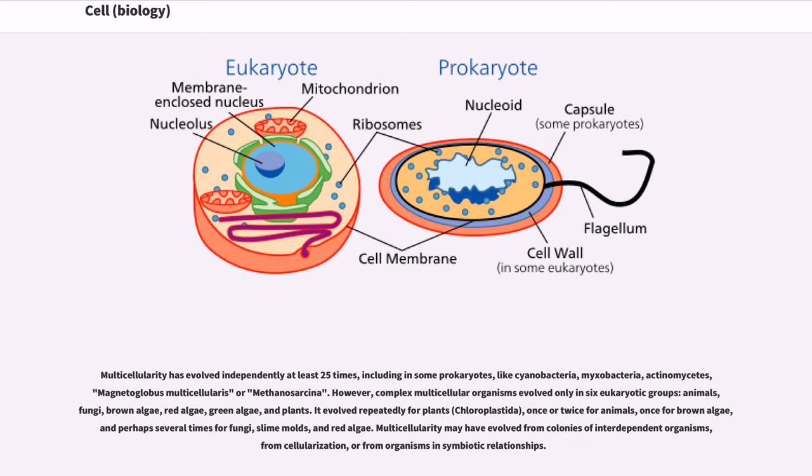It evolved repeatedly for plants, once or twice for animals, once for brown algae, and perhaps several times for fungi, slime molds, and red algae.